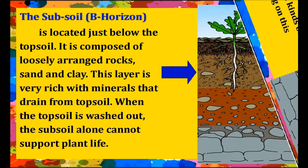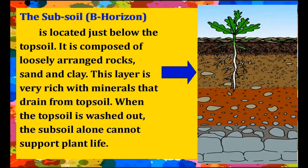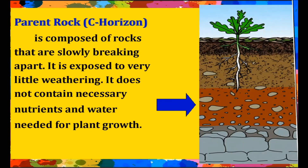The subsoil, or B-horizon, is located just below the topsoil. It is composed of loosely arranged rocks, sand, and clay. This layer is very rich with minerals that drain from the topsoil. When the topsoil is washed out, the subsoil alone cannot support plant life.